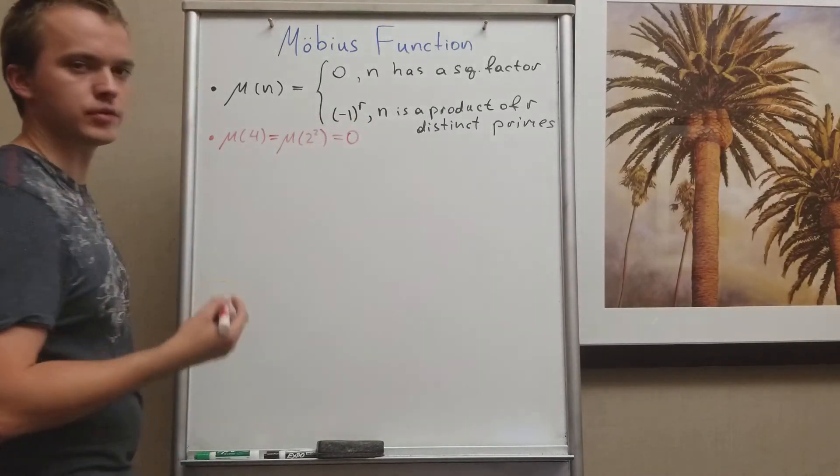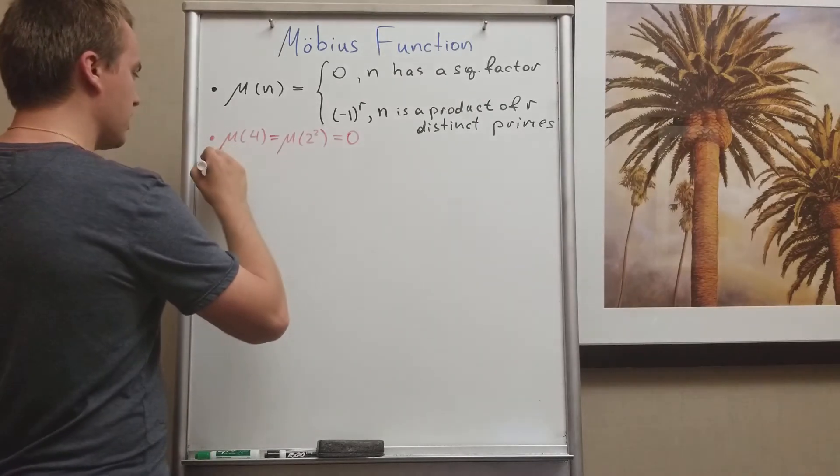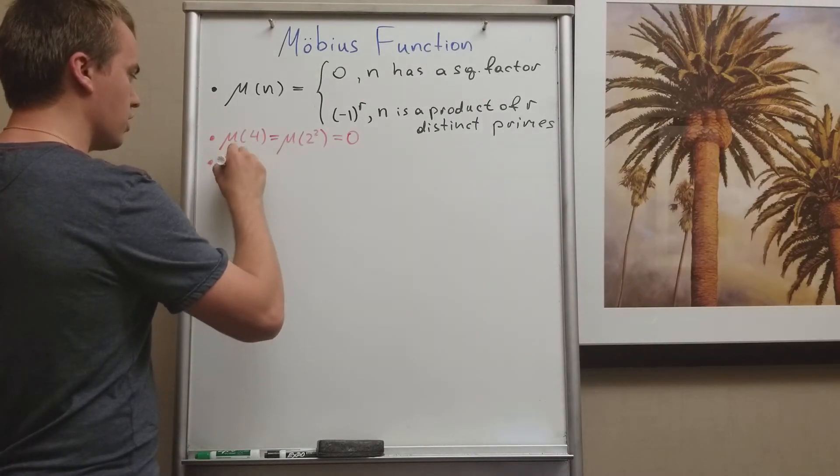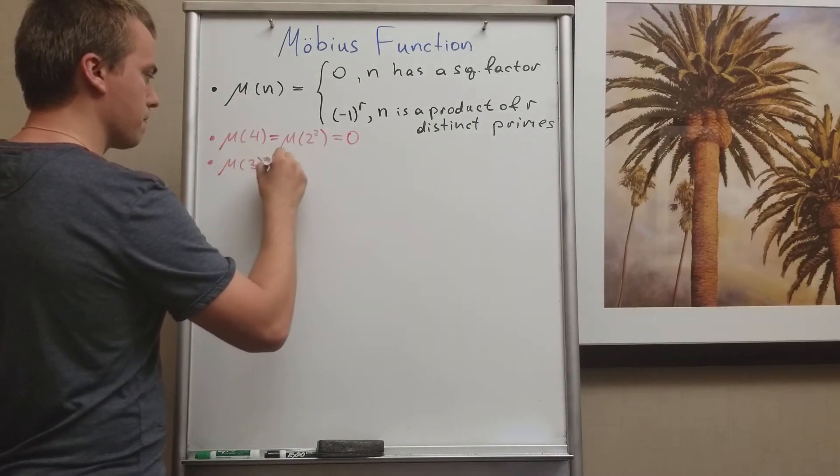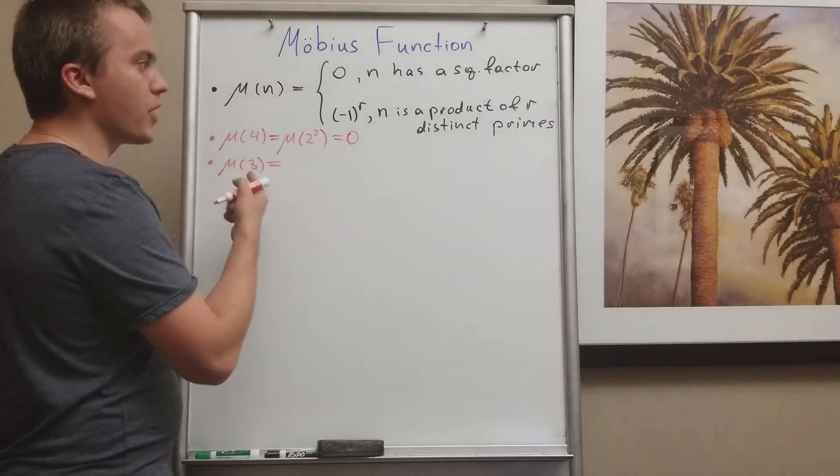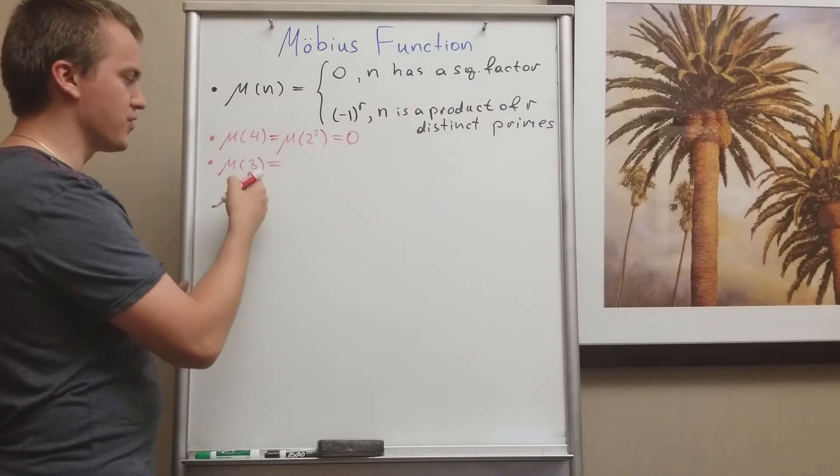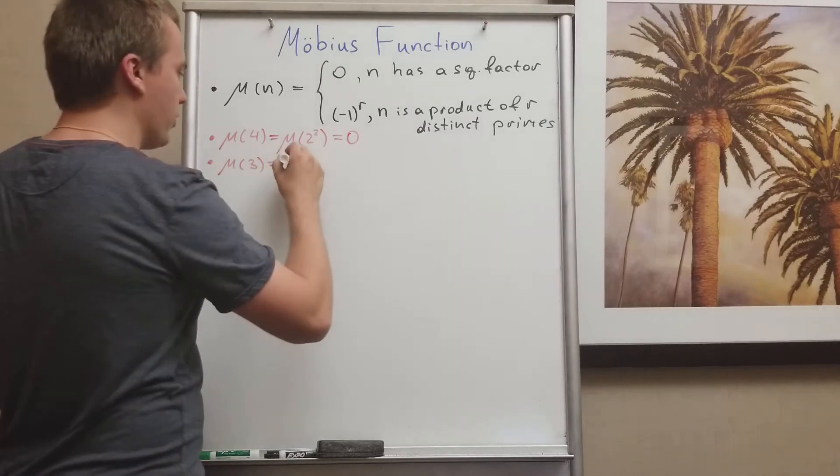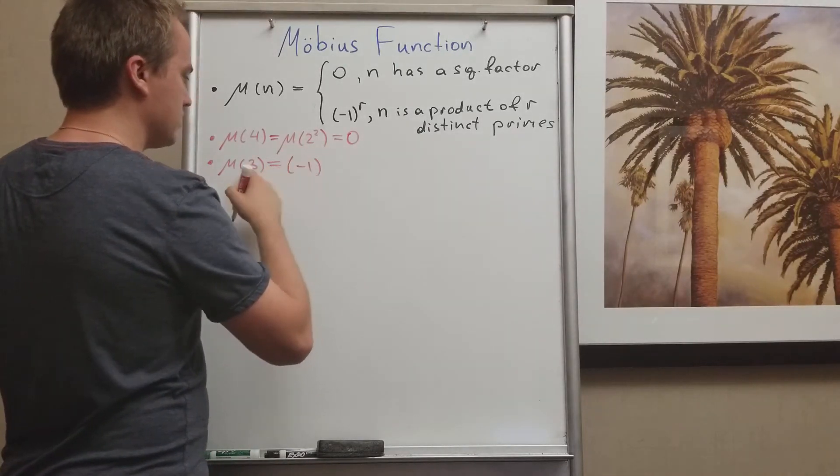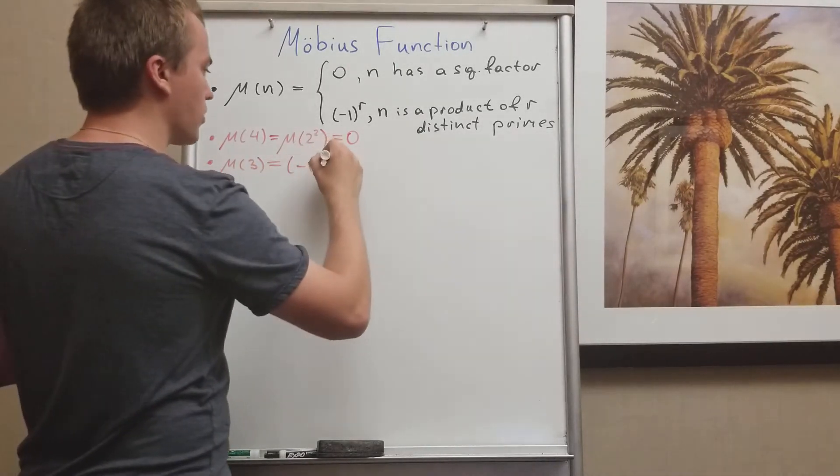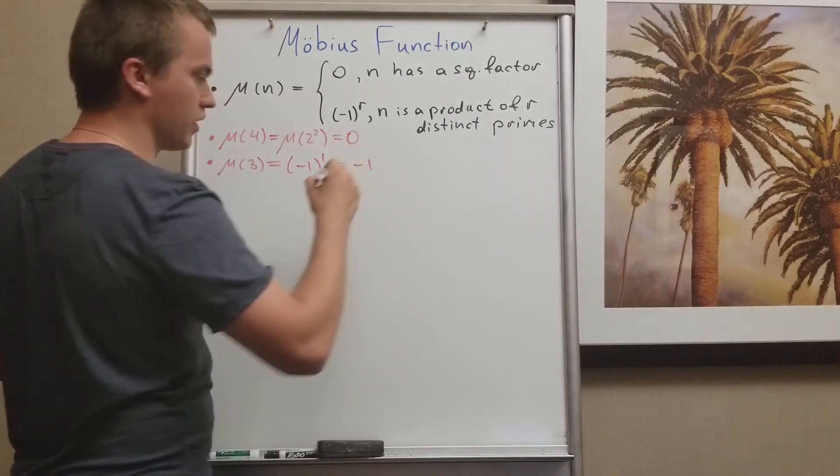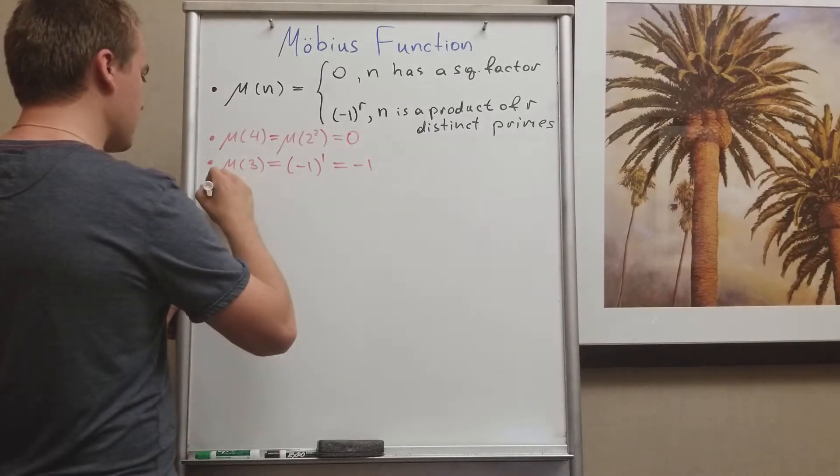Okay, good. Let's find the Möbius function of 3. And 3 is a product of one distinct prime number, 3 with itself like so. We're gonna have negative 1 since we have only one prime number to the power of 1, so it equals negative 1.